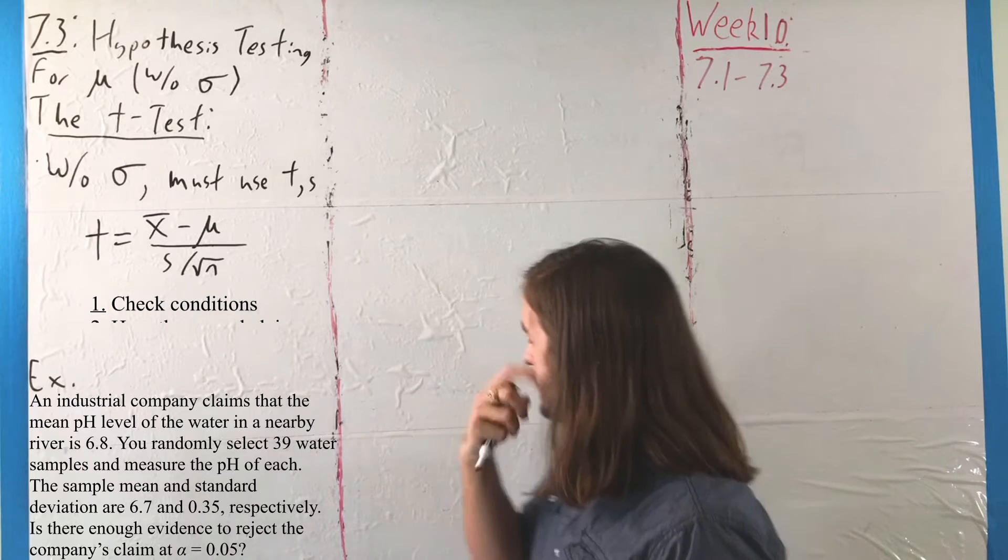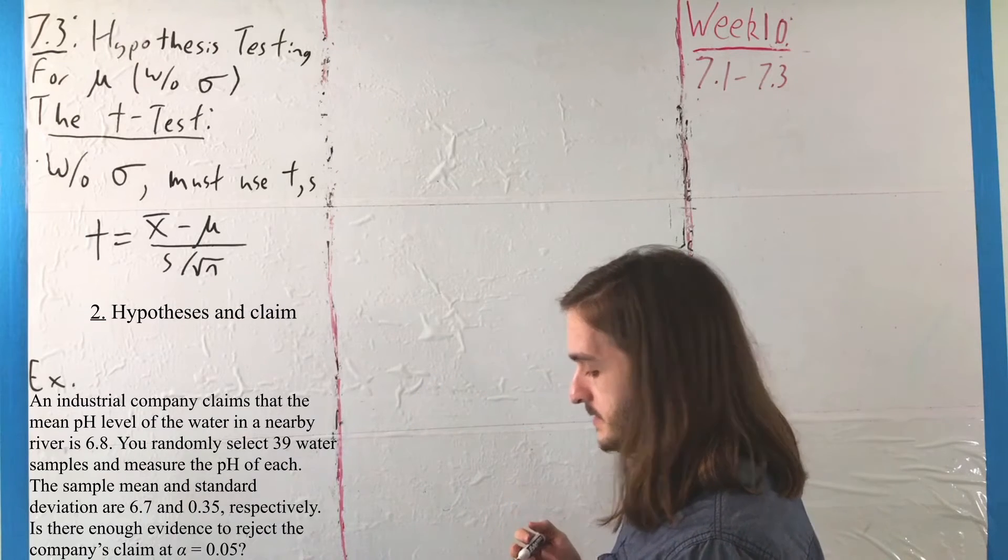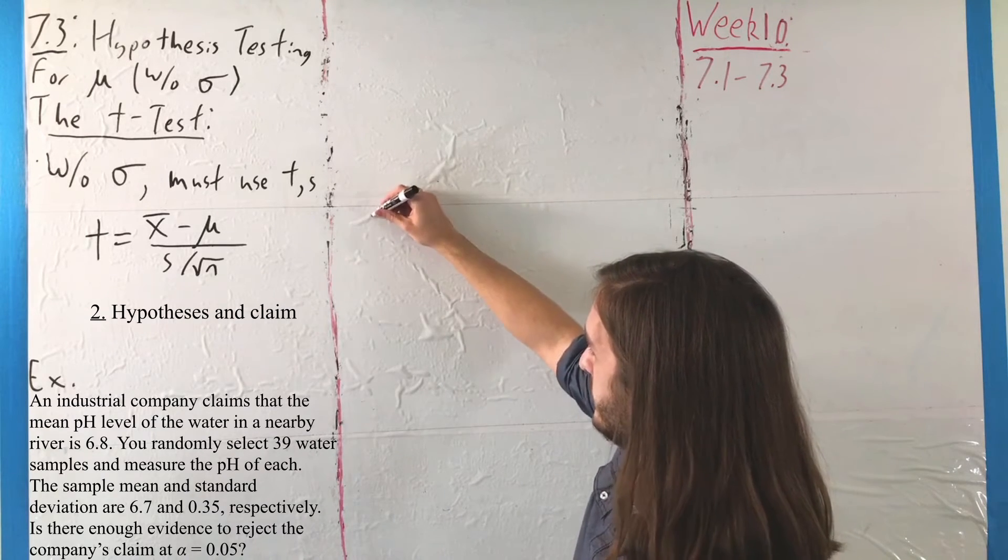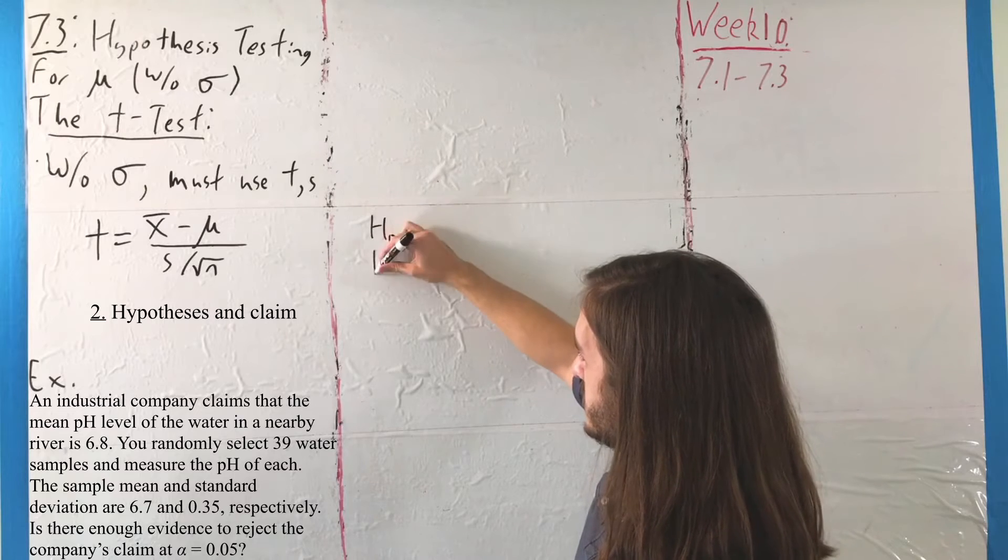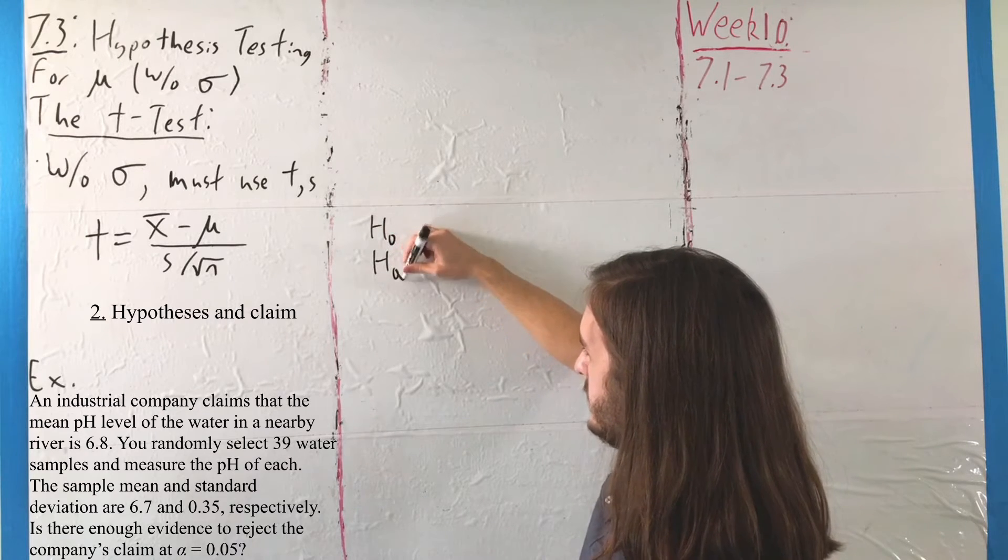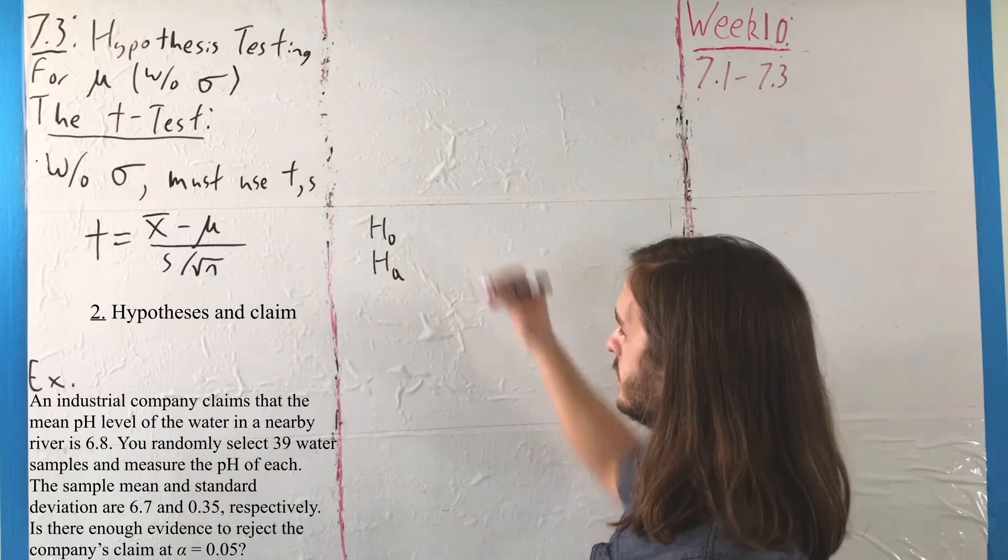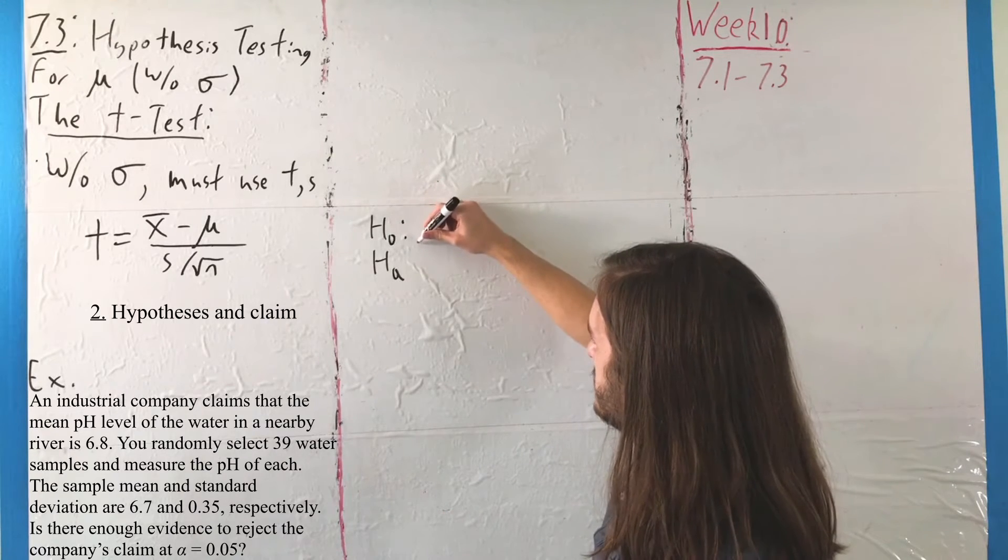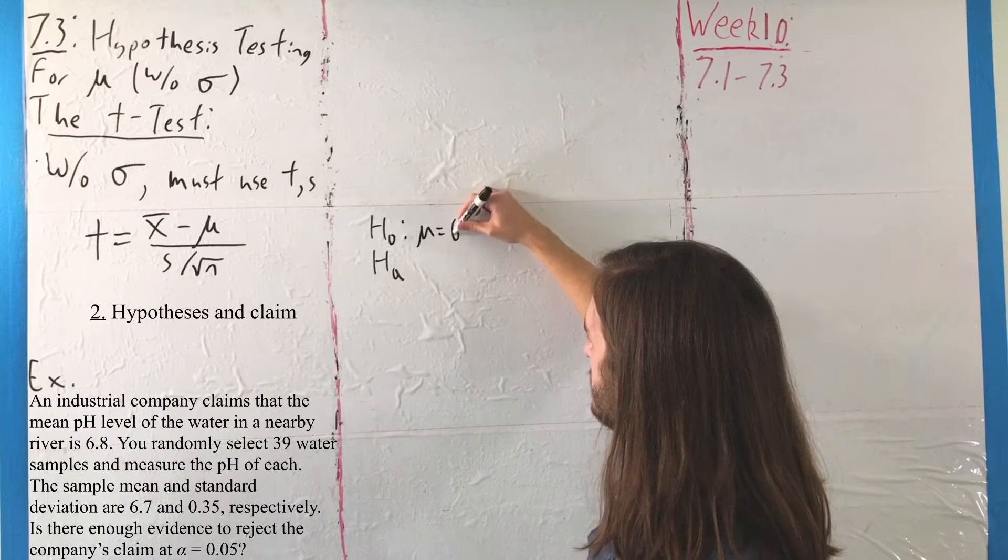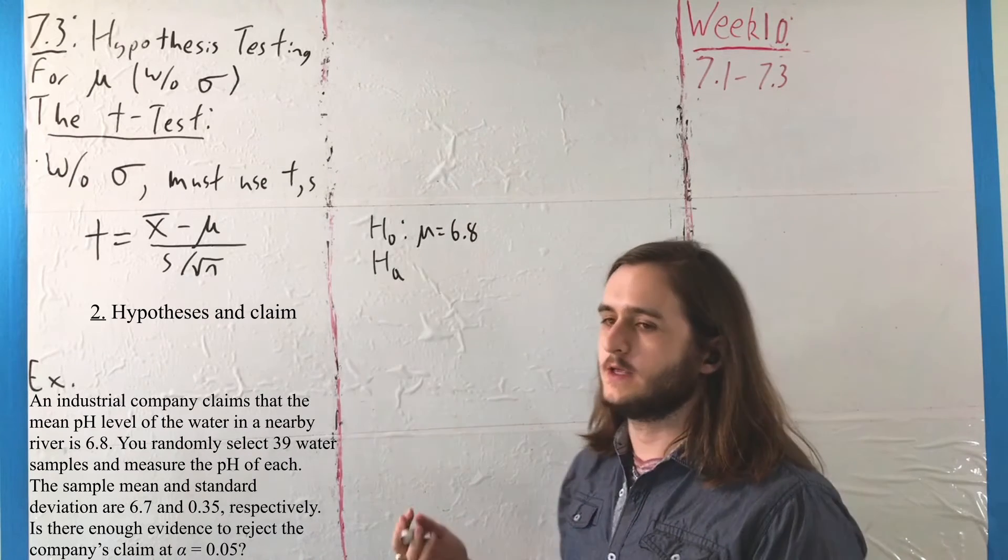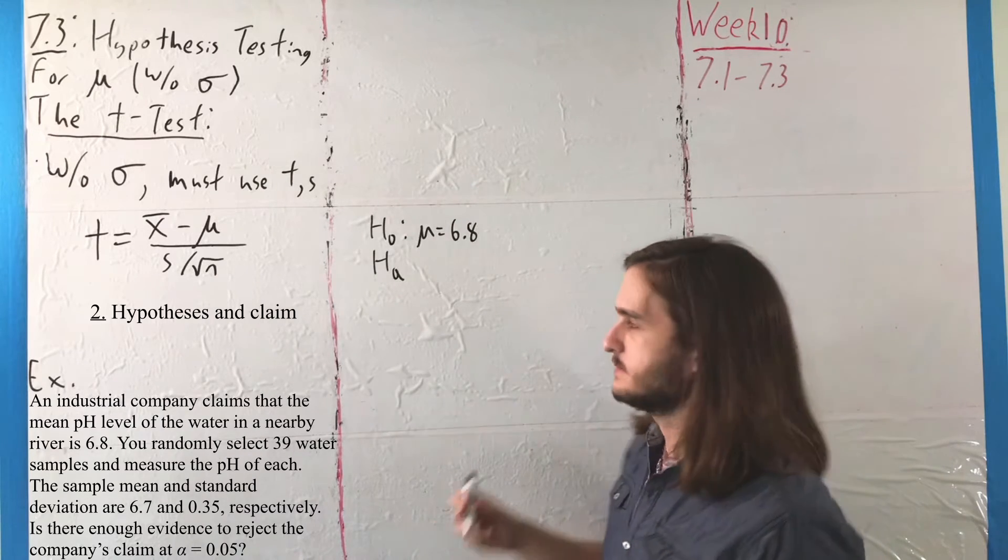From there, in terms of our hypotheses and our claim, we have the null and alternative like usual. But here, we have one of those odd values, where we are claiming that the mean mu is 6.8, or appropriately, the company is claiming that it's 6.8.